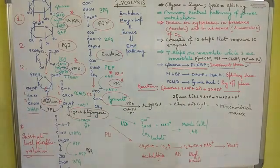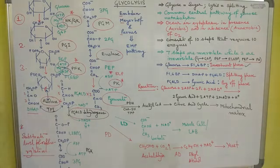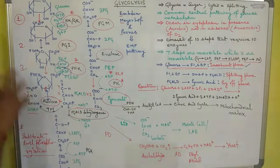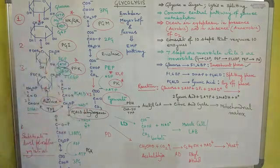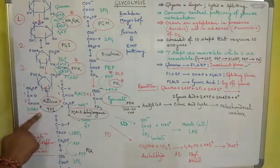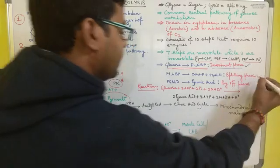The second part, where fructose 1,6-bisphosphate is converted into two triose phosphates — dihydroxyacetone phosphate and glyceraldehyde 3-phosphate — is called the splitting phase of glycolysis. Here the 6-carbon component, fructose 1,6-bisphosphate, is split into two 3-carbon components: DHAP and PGALD.